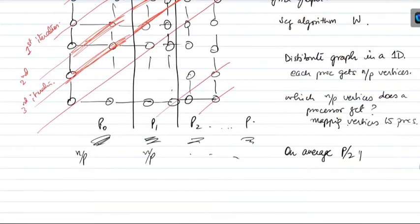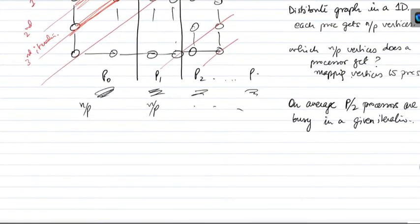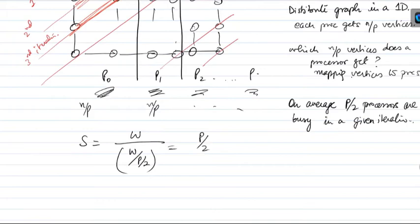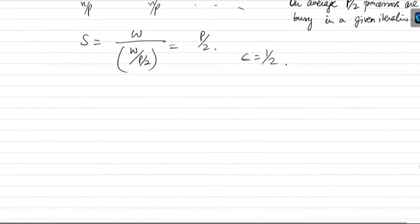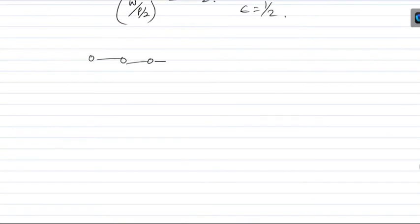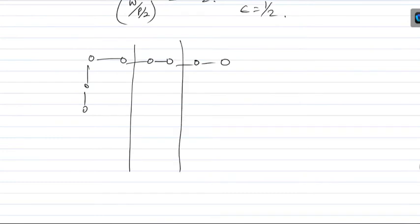On average, P/2 processors are busy in a given iteration. So your speed up is going to be the sequential time divided by the parallel time. Because on average P/2 processors are busy, I should be able to do this in W divided by P/2. So that's not bad — that's a good mapping. I'm getting almost linear speed up; efficiency is about half.